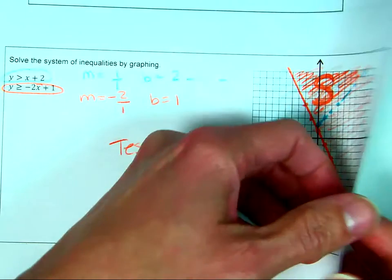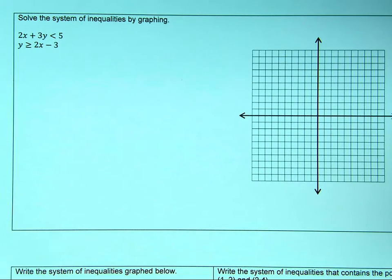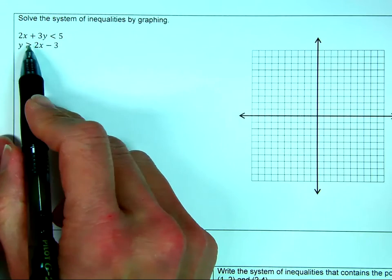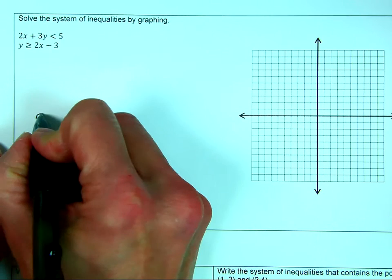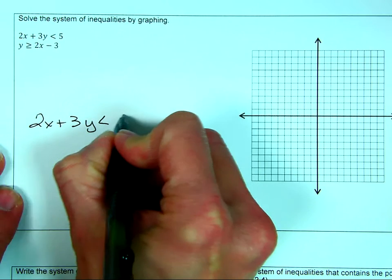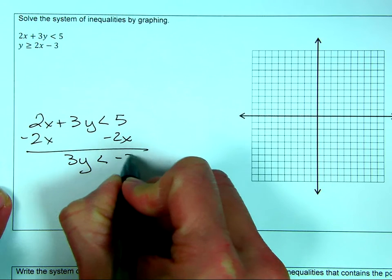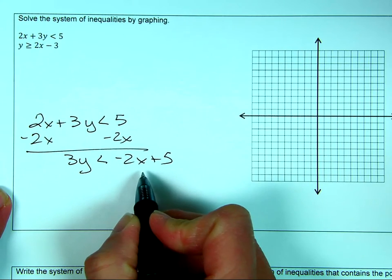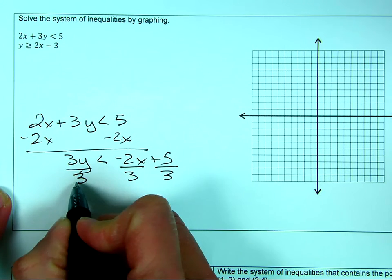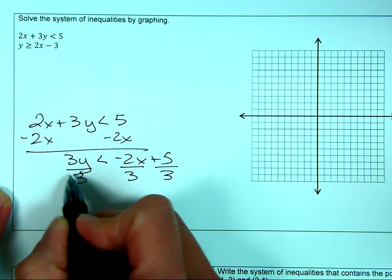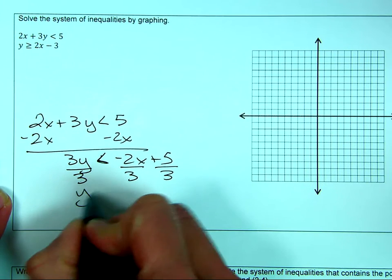We're going to do one more example, and then I'm going to show you how to write the inequalities from a graph. This next one isn't in slope-intercept form — it's in standard form. So I'm going to convert it: subtracting 2x from both sides gives 3y < -2x + 5. Then dividing by 3 — remember, if I were dividing by a negative, I'd have to switch the inequality sign, but I'm safe here.